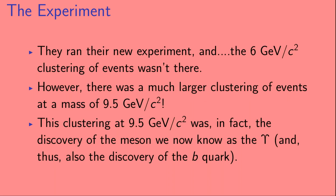They ran their new experiment, and the 6 GeV/c² clustering of events wasn't there. However, there was a much larger clustering of events at a mass of 9.5 GeV/c². This clustering at 9.5 GeV/c² was in fact the discovery of the meson we now know as the Upsilon, and thus it was also the discovery of the B quark.